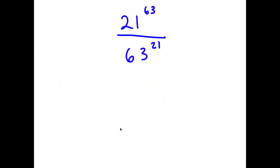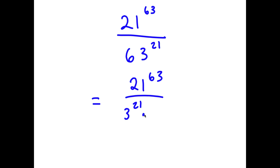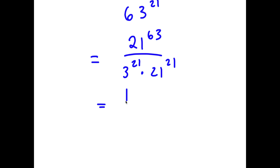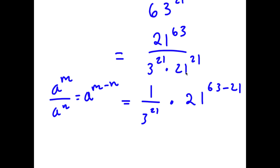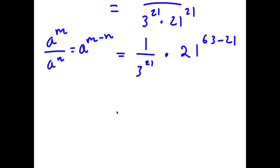So my only solution is x equals log of (1 plus the square root of 5 over 2) over log 2. Now in this problem, I have 21 to the power of 63 over 63 to the power of 21. To solve this, I'm going to first rewrite this as 21 to the power of 63 over 3 to the power of 21 times 21 to the power of 21. This is the same thing as 1 over 3 to the power of 21 times 21 to the power of 63 minus 21, using the rule that a to the power of m over a to the power of n equals a to the power of m minus n. So I rewrite this as 21 to the power of 63 minus 21, which equals 21 to the power of 42.